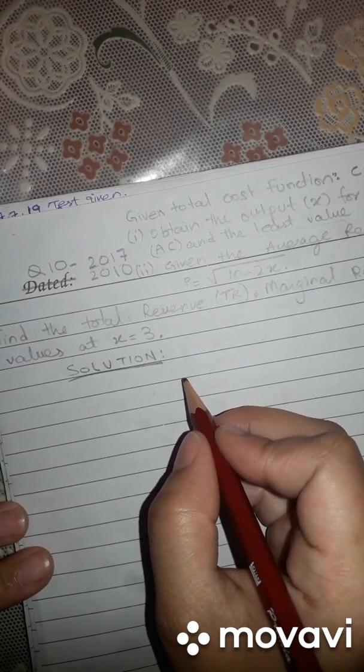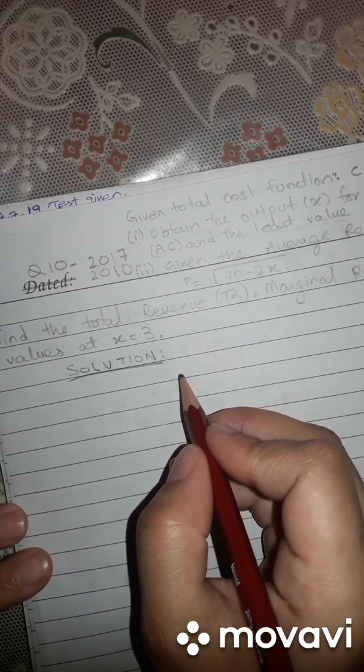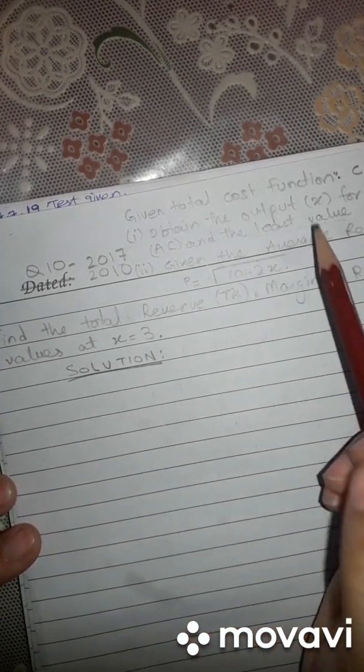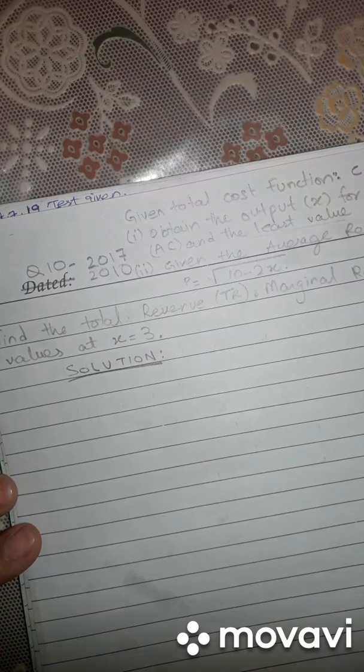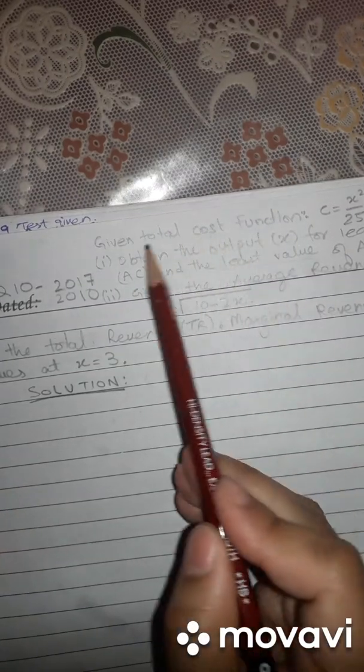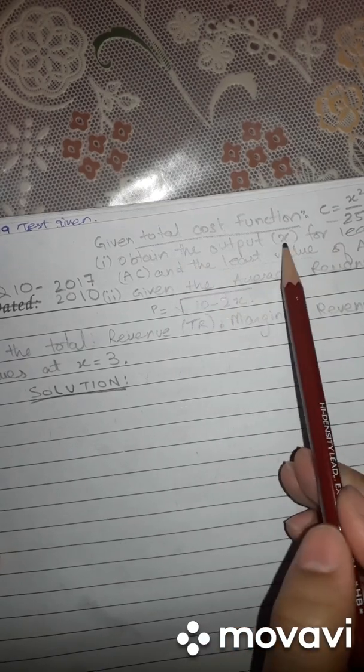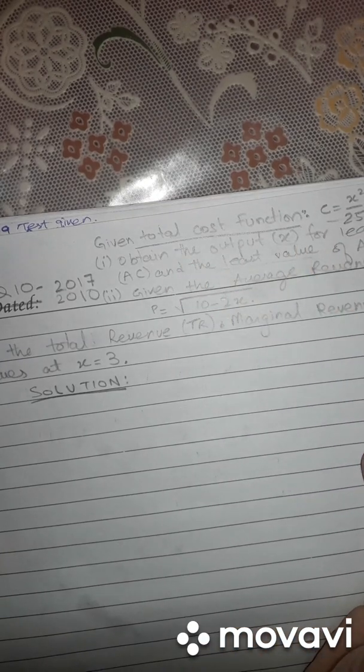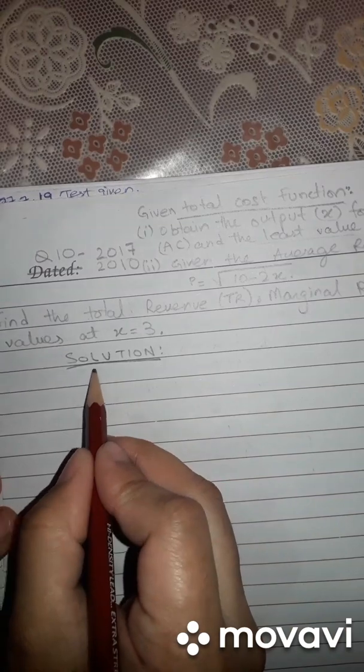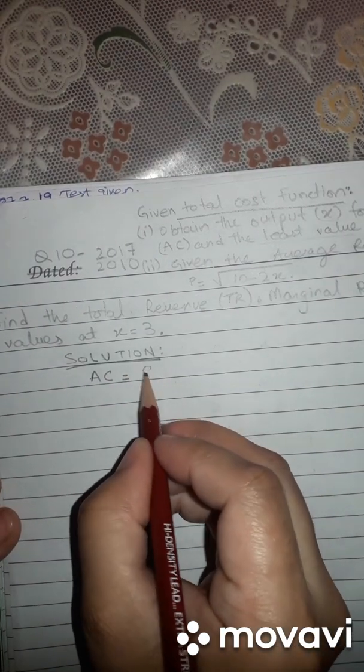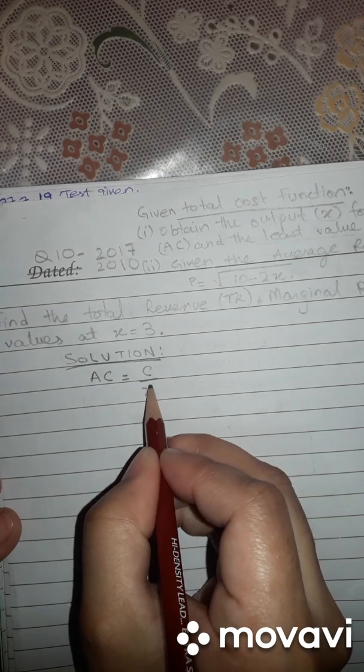You must know your cost formulas. That is, first formula that we are using for finding average cost from total cost function. Total cost function is this, given we have to find AC, average cost. So for average cost, AC formula is AC is equal to C upon X.